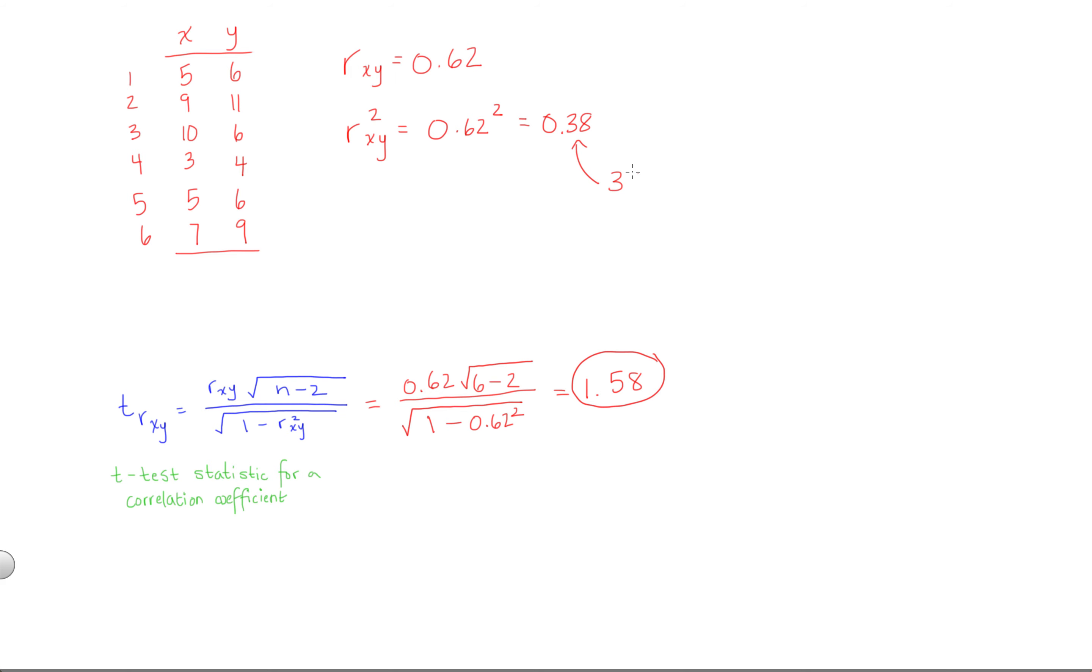So, we're accounting for 38% of the variance in x on the basis of y. And that's how you calculate a t-test statistic for a correlation coefficient, as well as the coefficient of determination for that correlation.